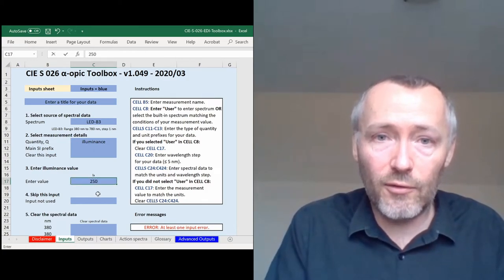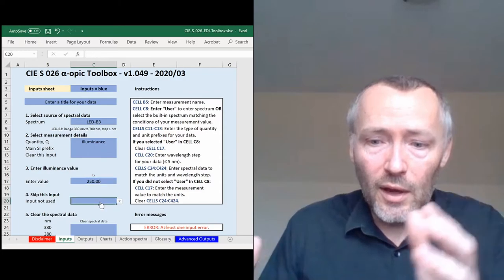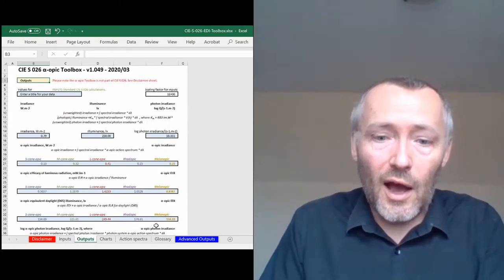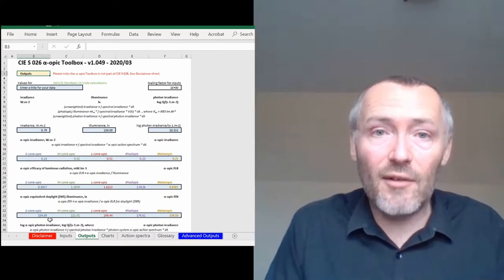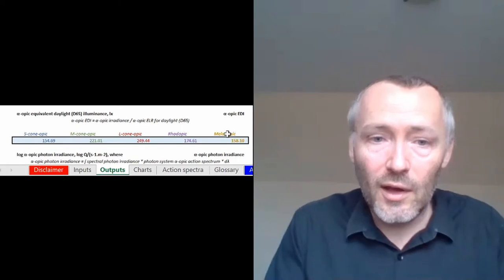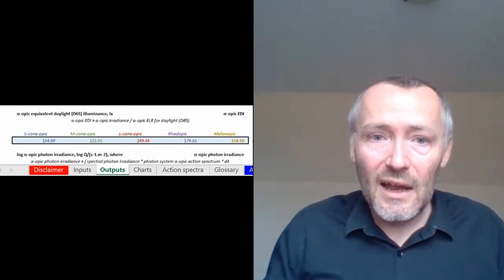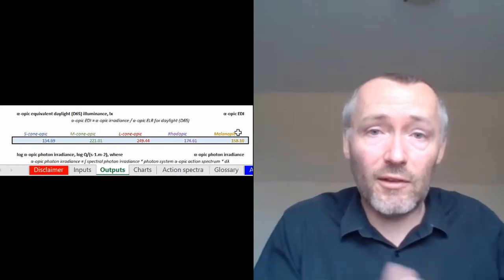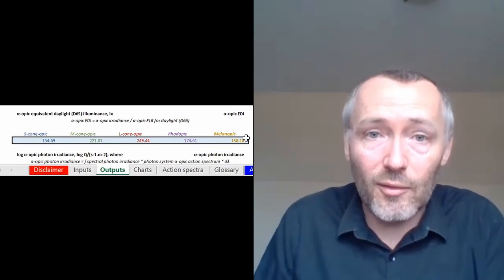We can go straight over to the outputs and we can see what the different values are. For example, of the alpha-opic EDI values, the equivalent daylight illuminance values are all displayed along there. And as you can see, none of them is exactly 250 lux because that's the visual illuminance. These are the alpha-opic illuminance values.